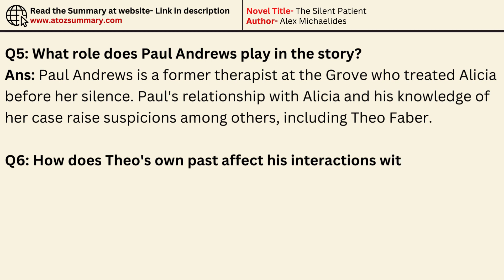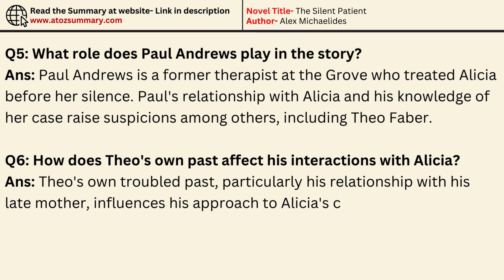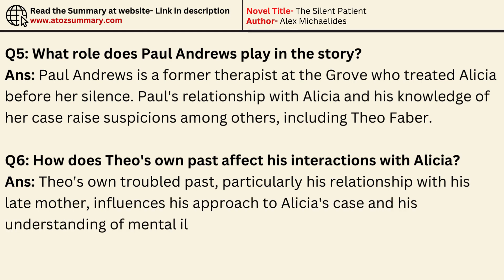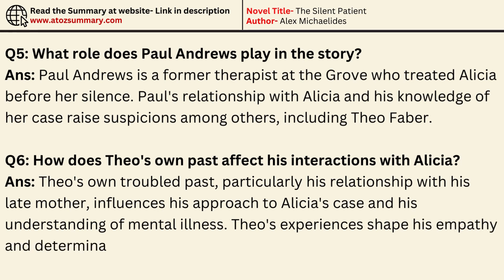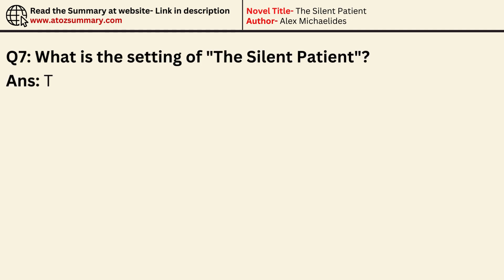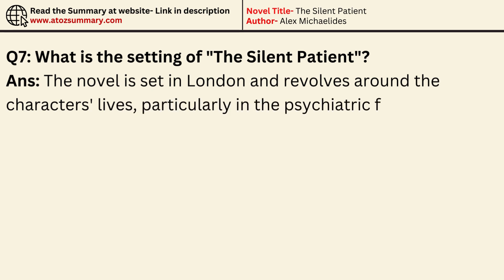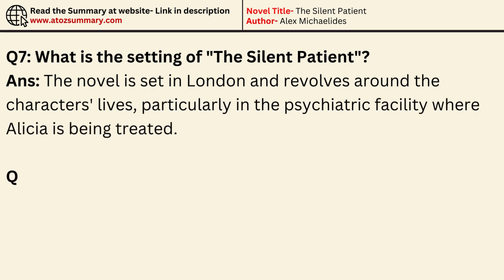How does Theo's own past affect his interactions with Alicia? Theo's own troubled past, particularly his relationship with his late mother, influences his approach to Alicia's case and his understanding of mental illness. Theo's experiences shape his empathy and determination to help Alicia. The novel is set in London and revolves around the characters' lives, particularly in the psychiatric facility where Alicia is being treated.